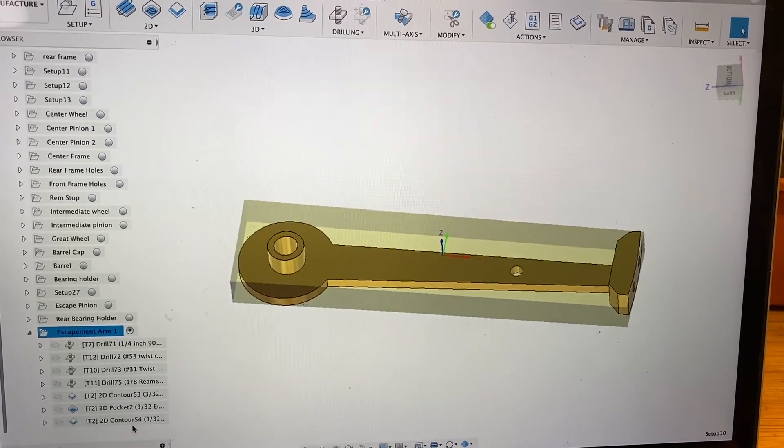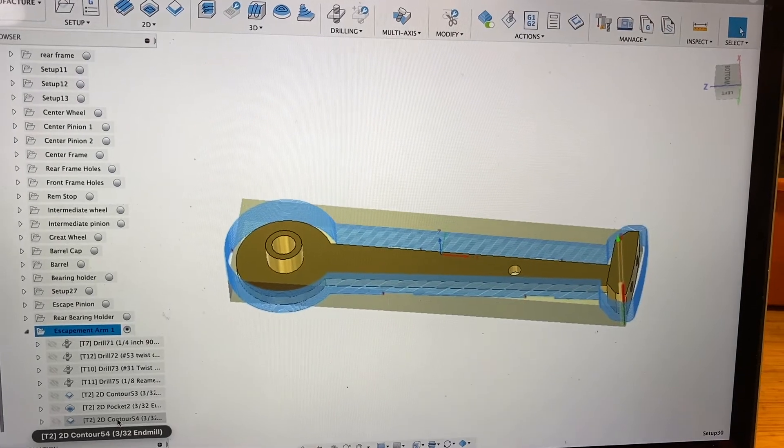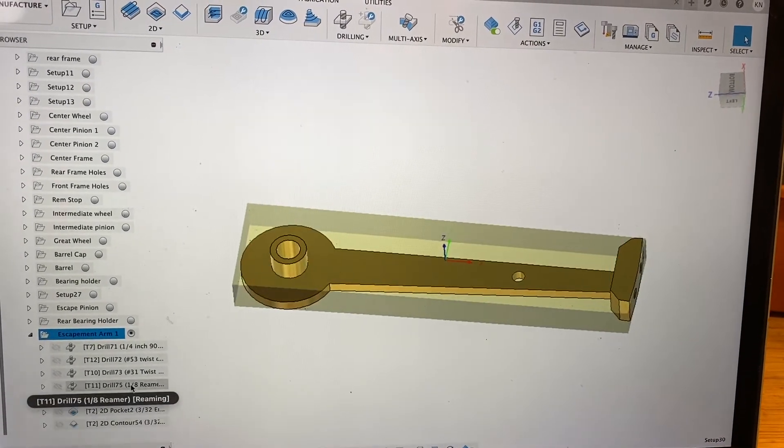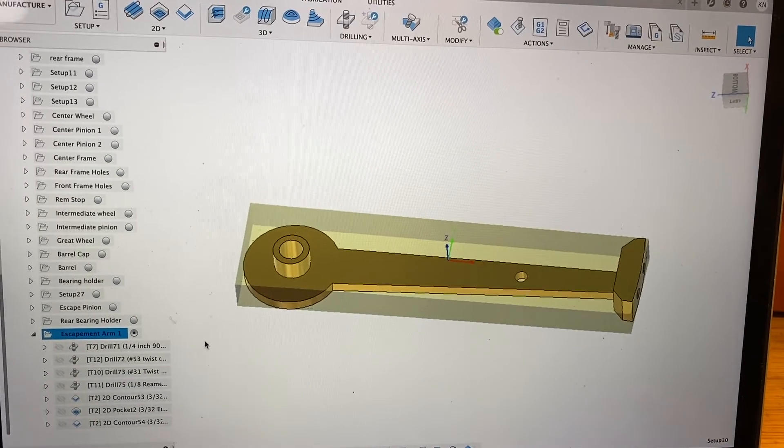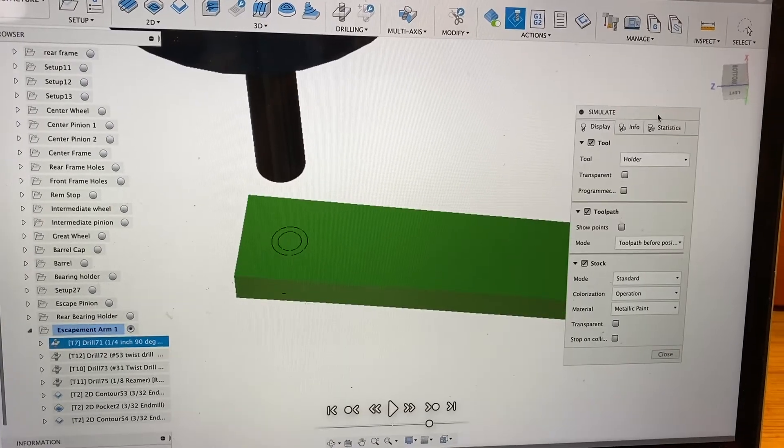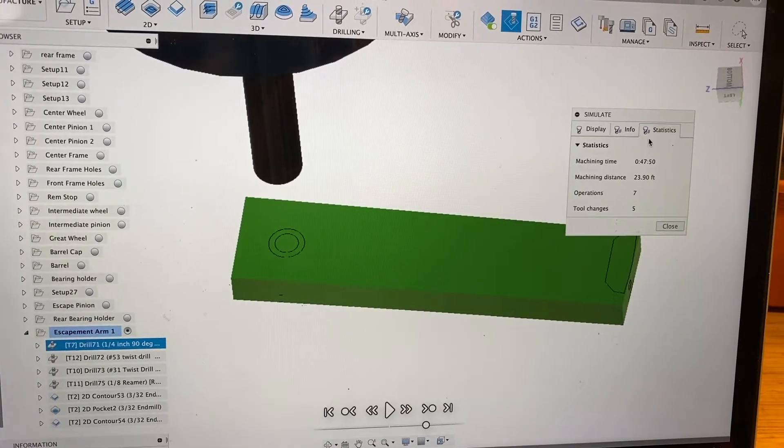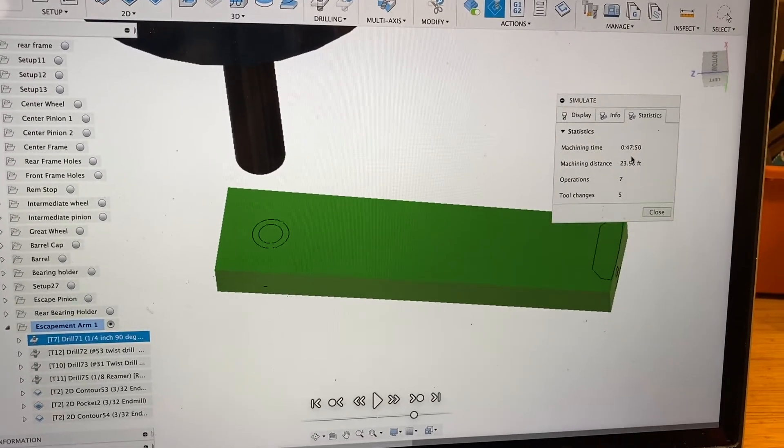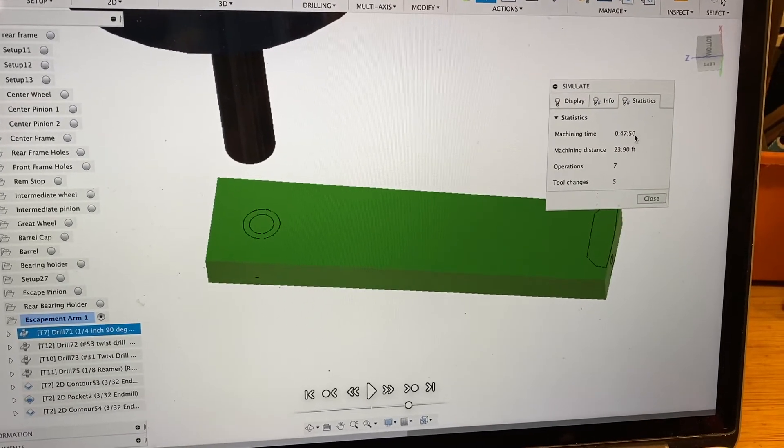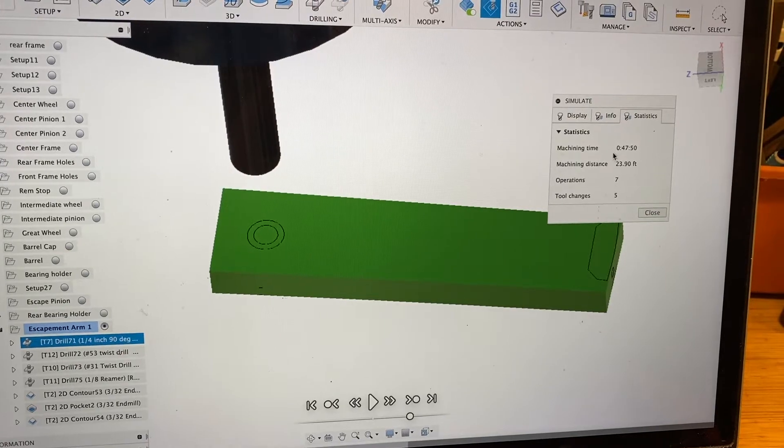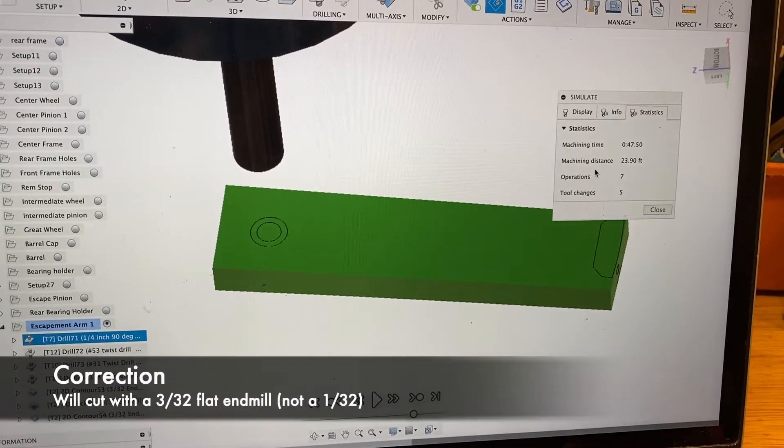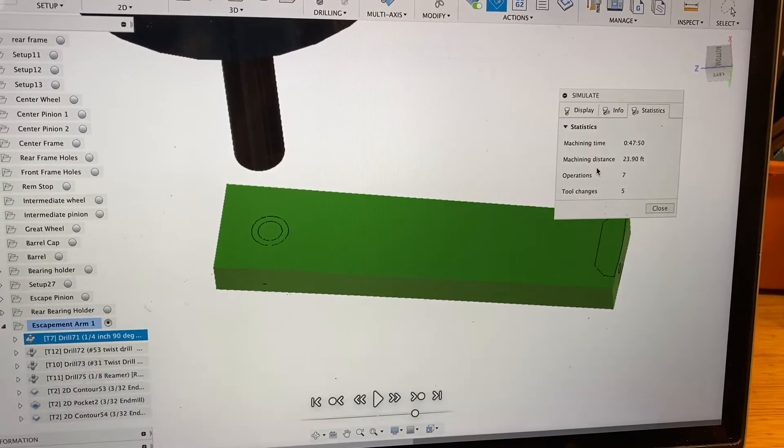Then I'll come down in a contour and hold it with tabs - probably a better way to do it, but just a simple way I've gotten used to. When we simulate, we're going to take about 47 minutes on that. I might do a couple things to speed it up, but we're using a 1/32 bit so it takes a while.